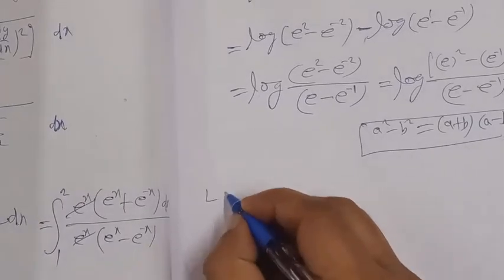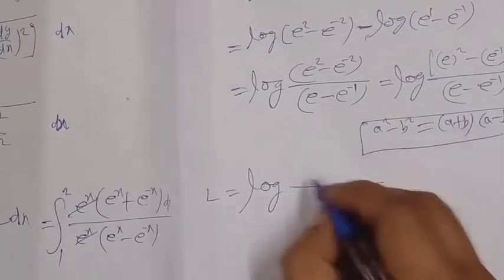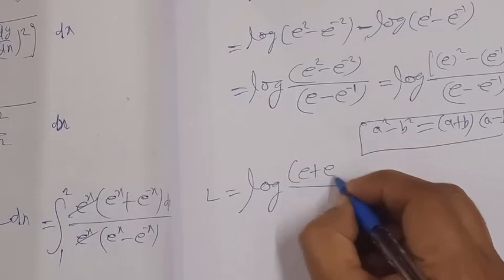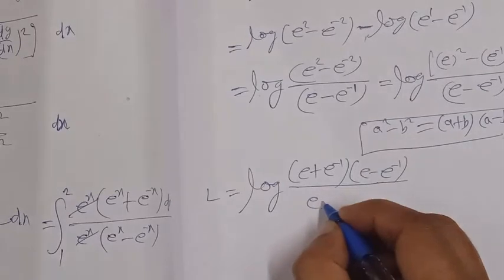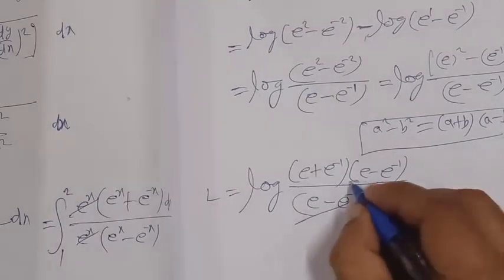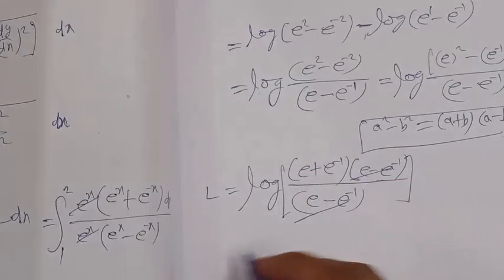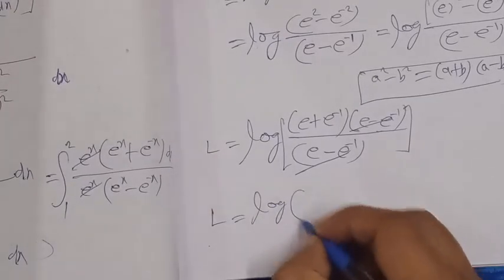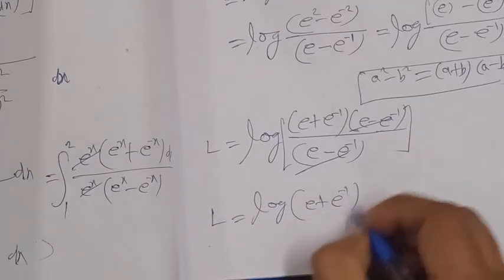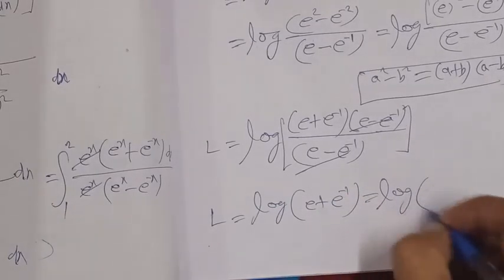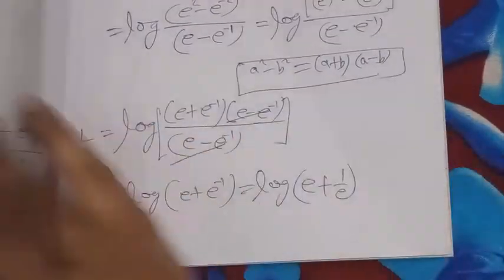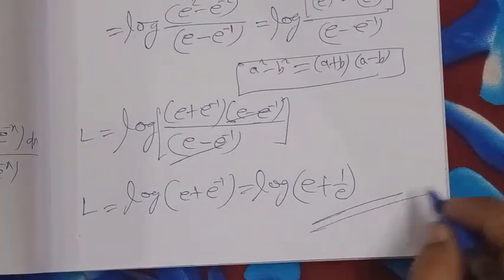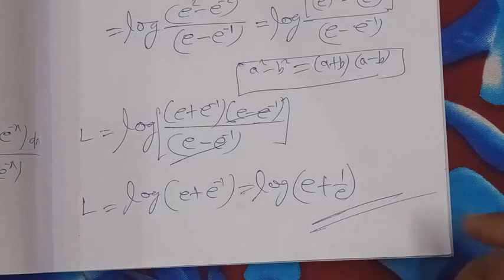This is the required length. After simplification using the identity and cancelling common factors, the answer becomes log[(e + e^(−1)) / (e^1 + e^(−1))], which can also be written as log[(e + 1/e)]. So the final answer is log(e + 1/e). Thank you very much for listening. Alhamdulillahi rabbil alameen.